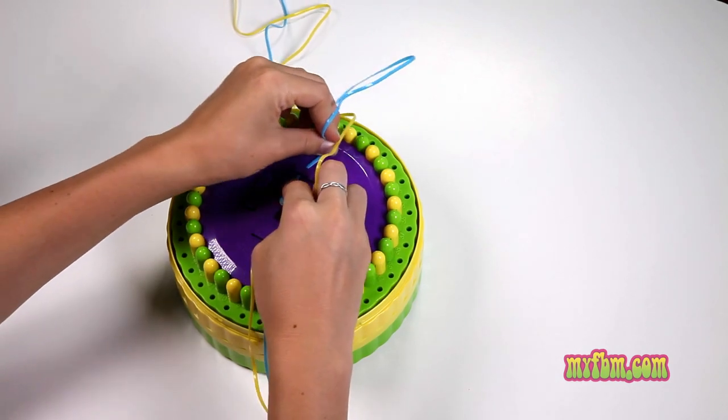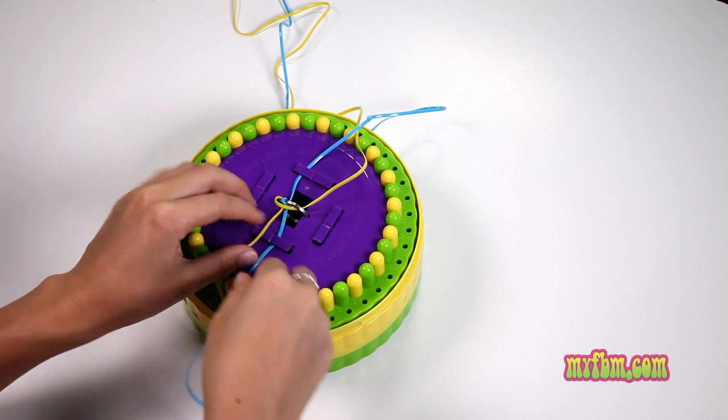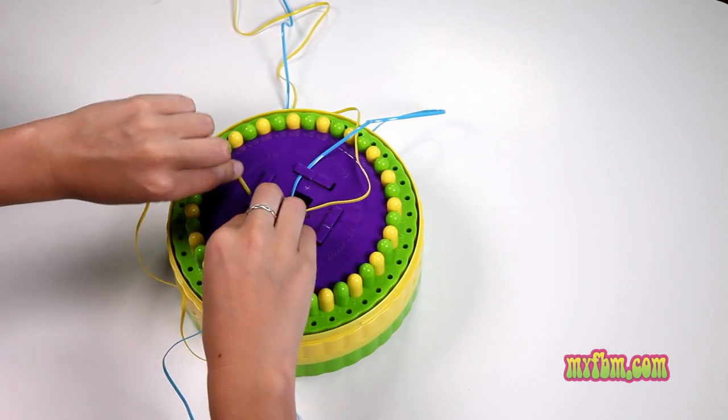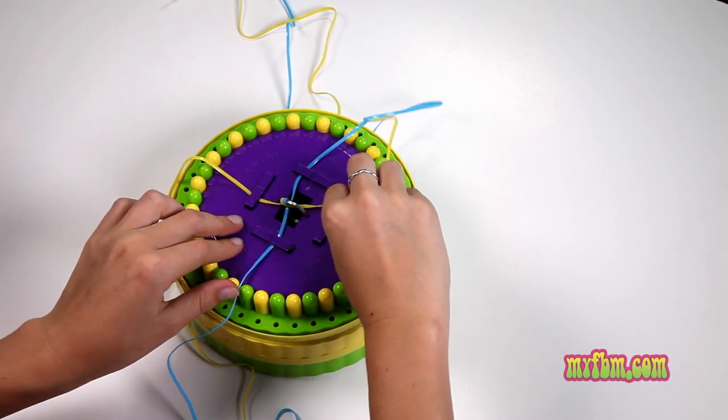Place your blue lace underneath the number one and your other blue one underneath the number five. Place your yellow lace underneath the number seven and your other one underneath the three.